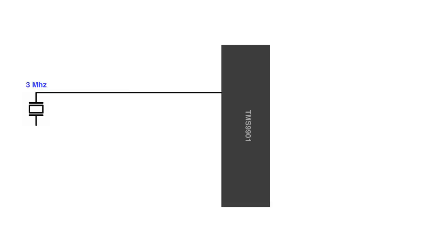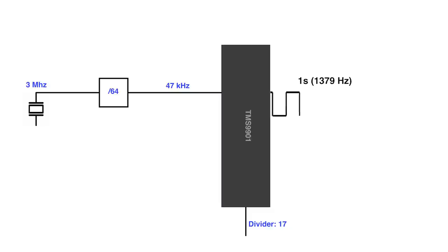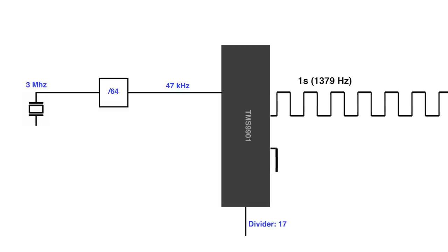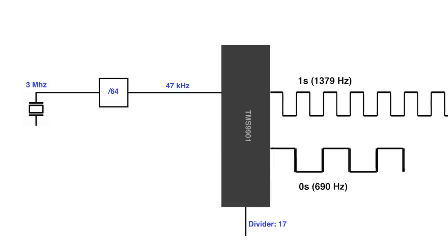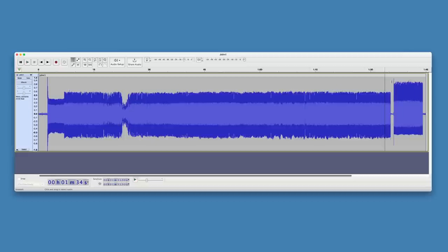The TI-99/4A achieved this by toggling the sound output at certain frequencies. The main clock signal to the TMS-9901 is 3 MHz divided by 64, or about 47 kHz. For cassette operations, the clock divider is set to 17, so that becomes 2.76 kHz. With that set up, to write a 1 to the tape the computer would toggle its output every clock cycle, creating a sound of about 1379 Hz, and to write a 0 it would toggle every 2 cycles, creating a sound of 690 Hz.